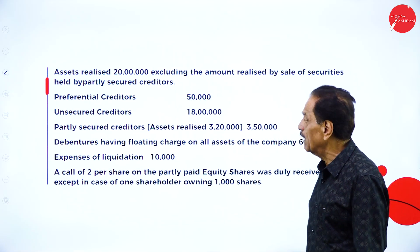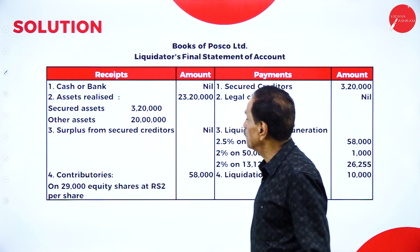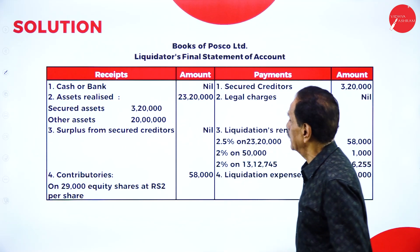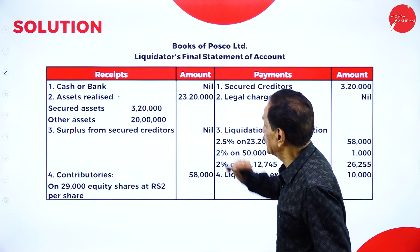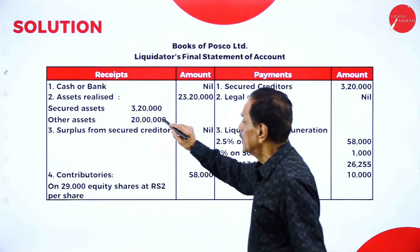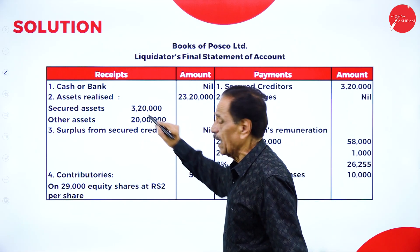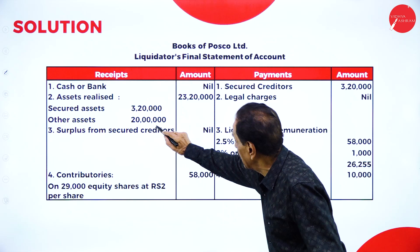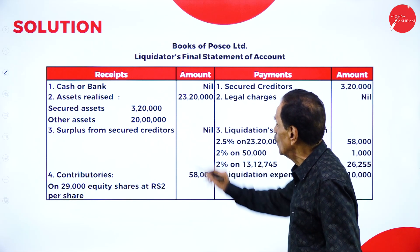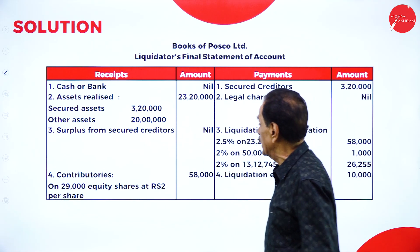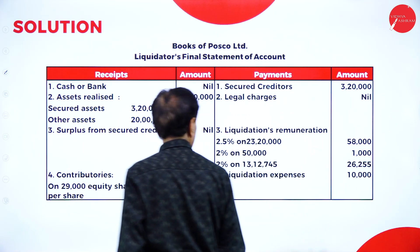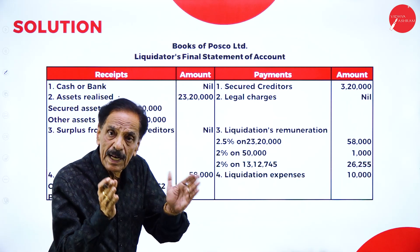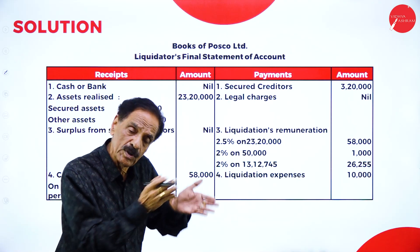Now, going through the format: cash and bank — nil is there. Asset realized by secured creditor: Rs.3,20,000. From other assets, we realize Rs.20 lakh. Total amount realized: Rs.23,20,000. So you have a balance of Rs.23,20,000.